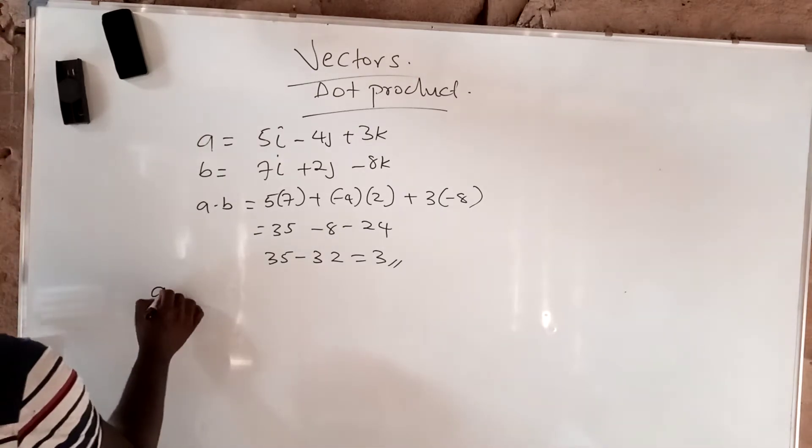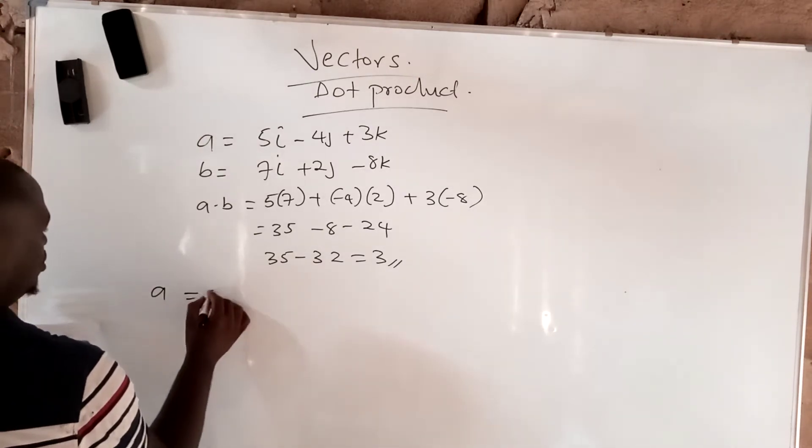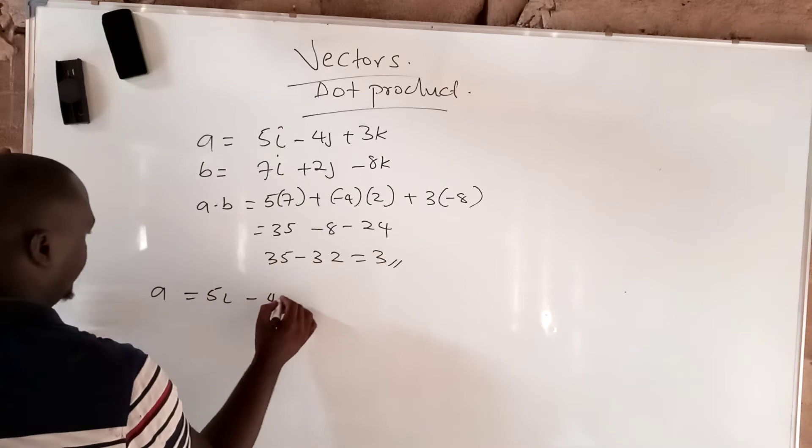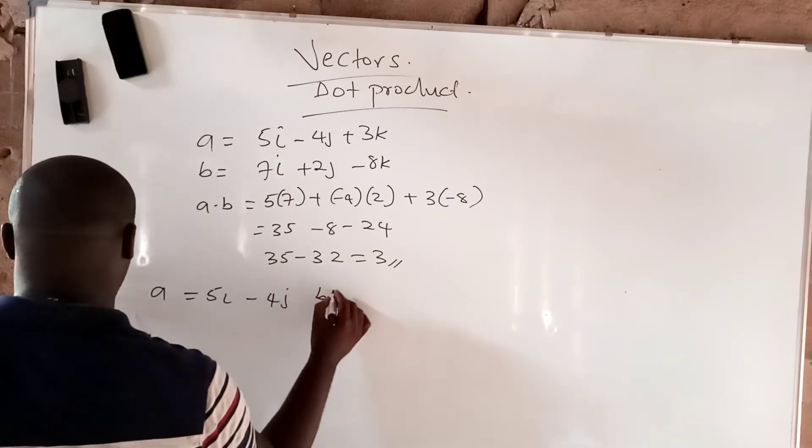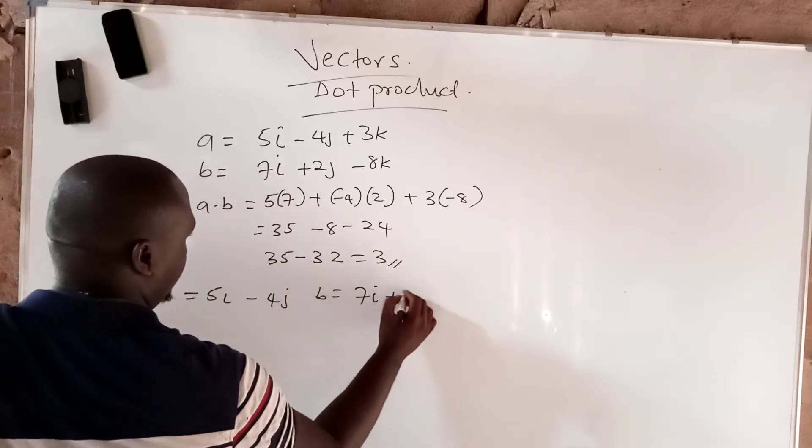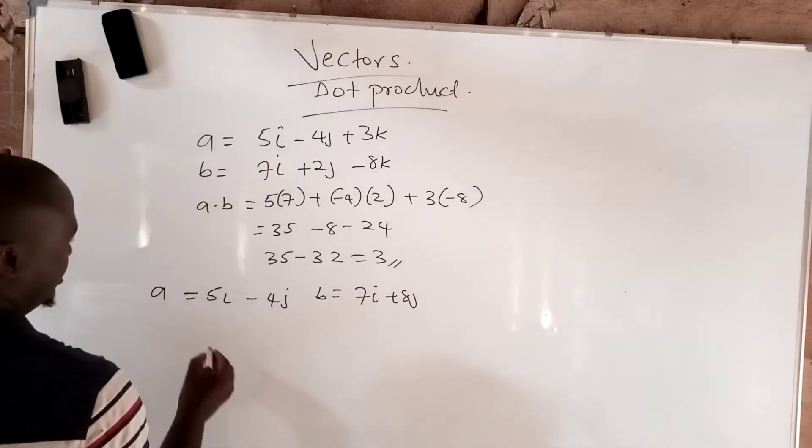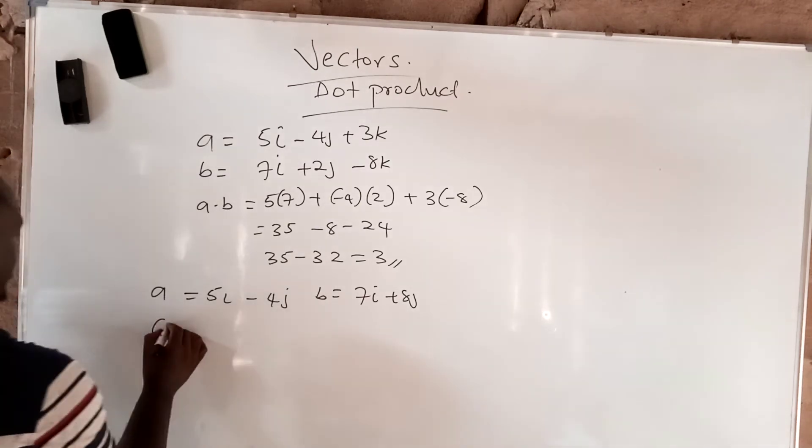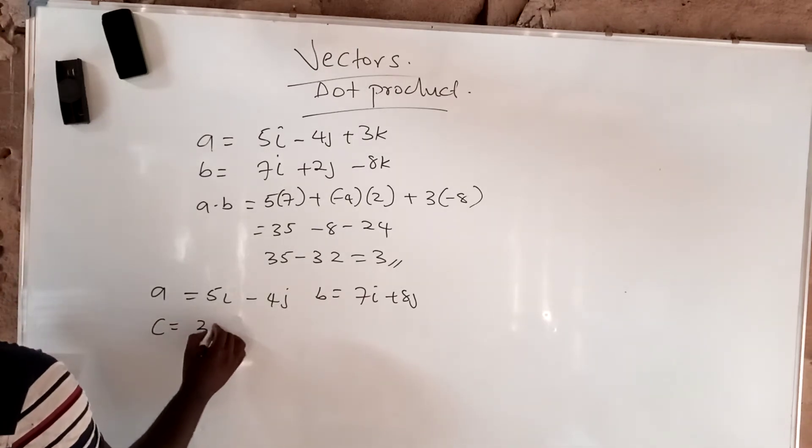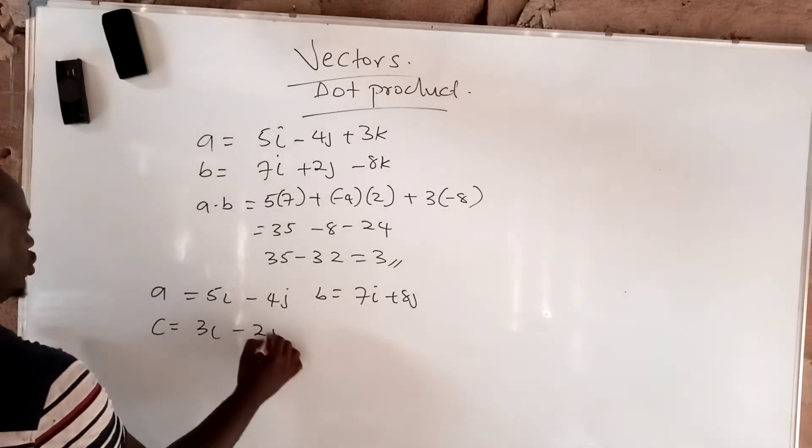Another example for dot product: we may have something like this where a equals 5i minus 4j, and then b equals 7i plus 8j.